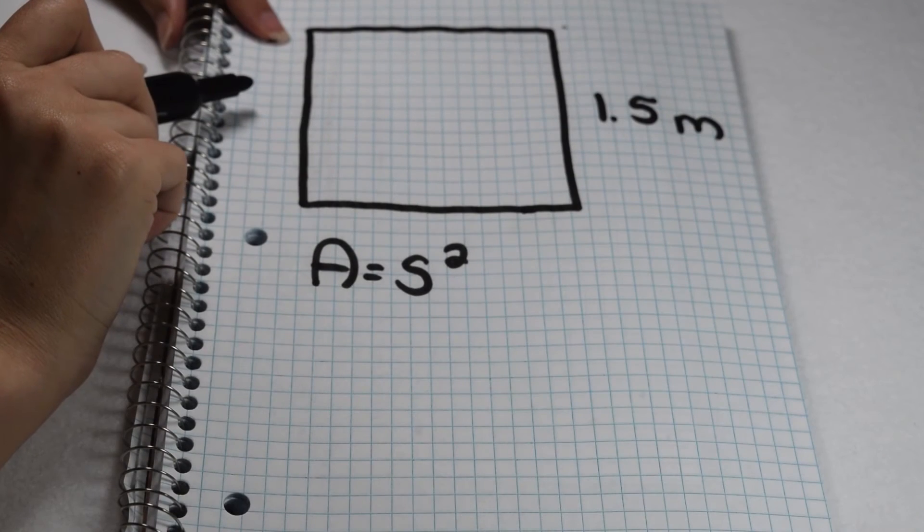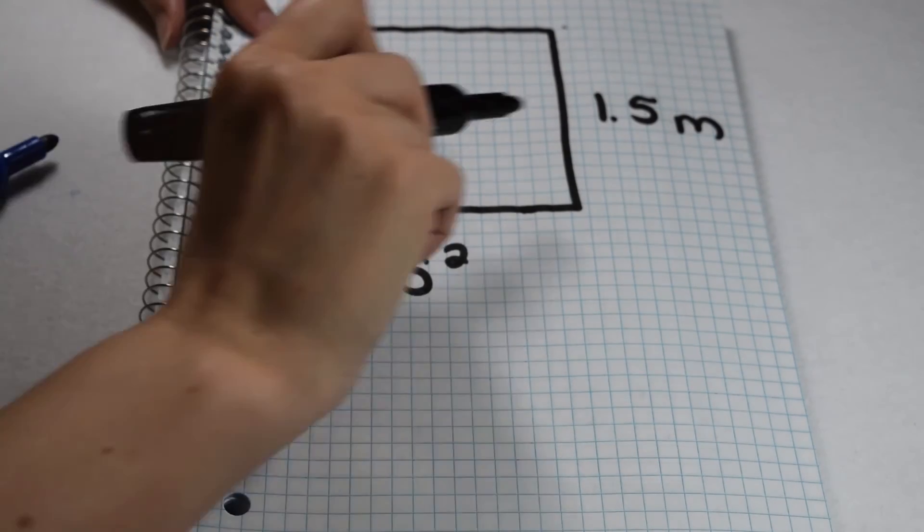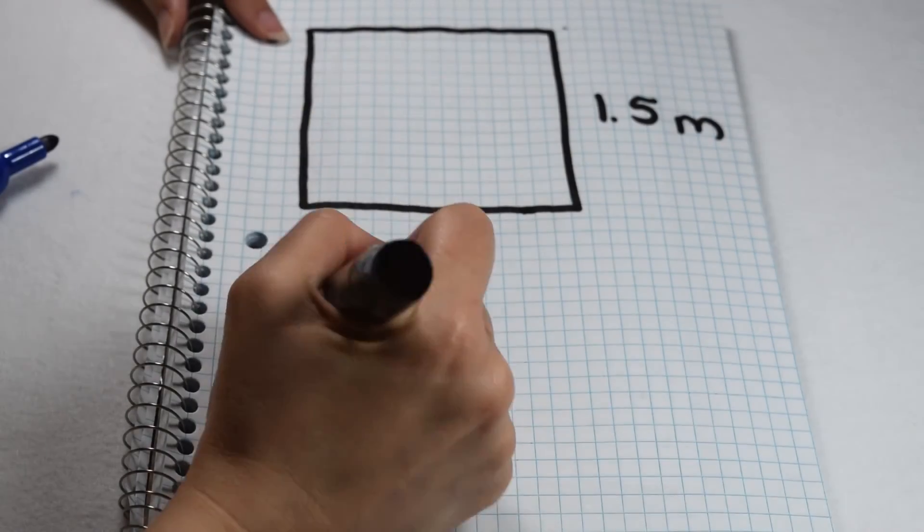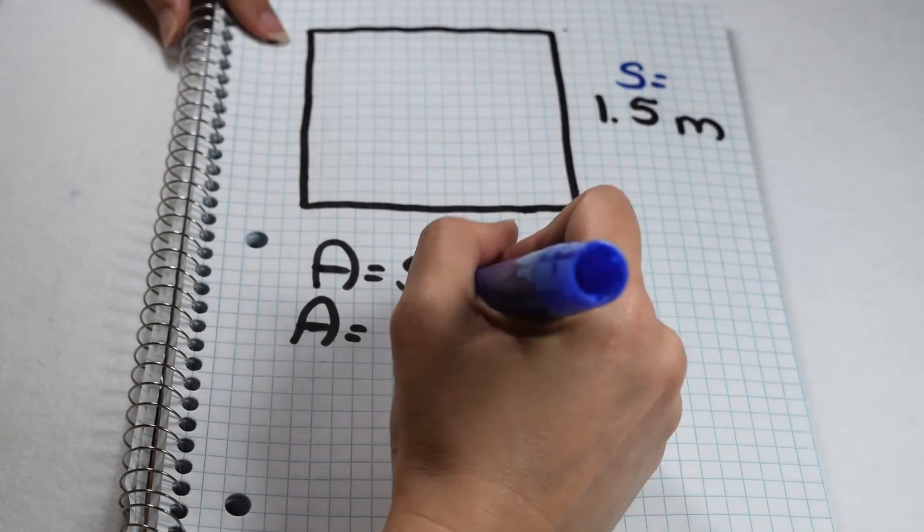When I'm finding the area of a square, I know I can do so by solving the equation area equals side squared. My side length is going to be 1.5 meters. This means I can find this area by doing 1 in 5 tenths squared.